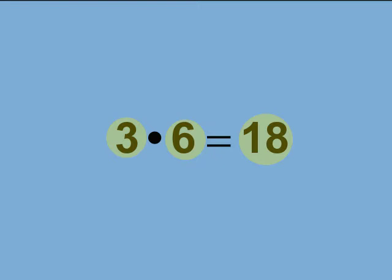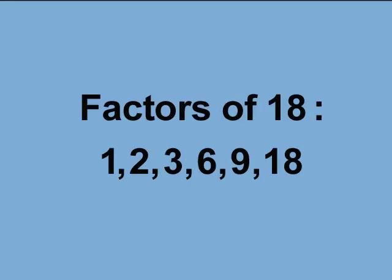The number 18 has other factors, which are shown here: 1, 2, 3, 6, 9, 18. The number 18 is divisible by each of these factors with no remainder.